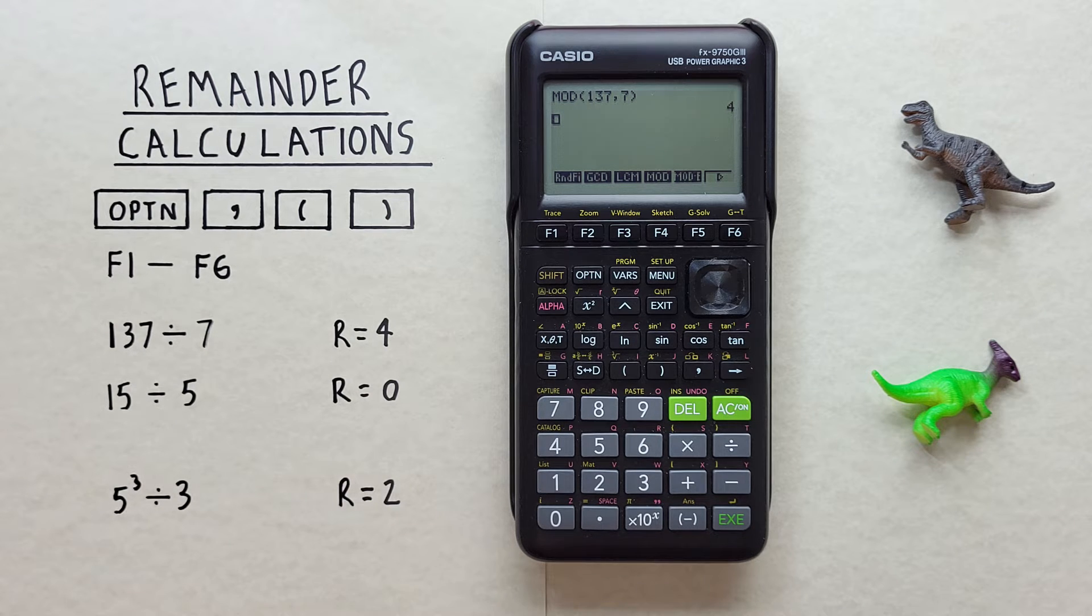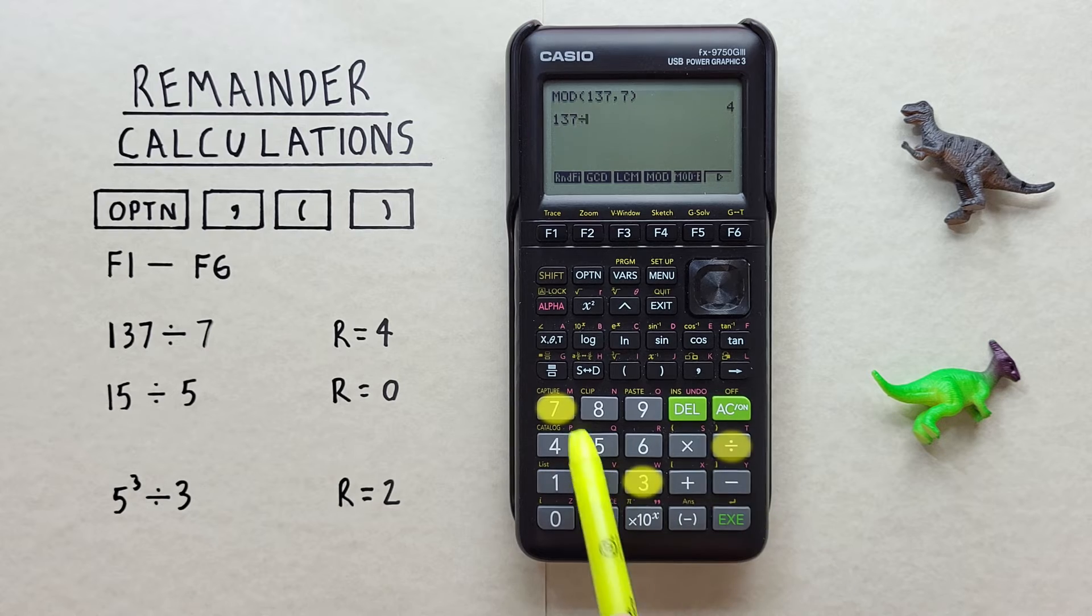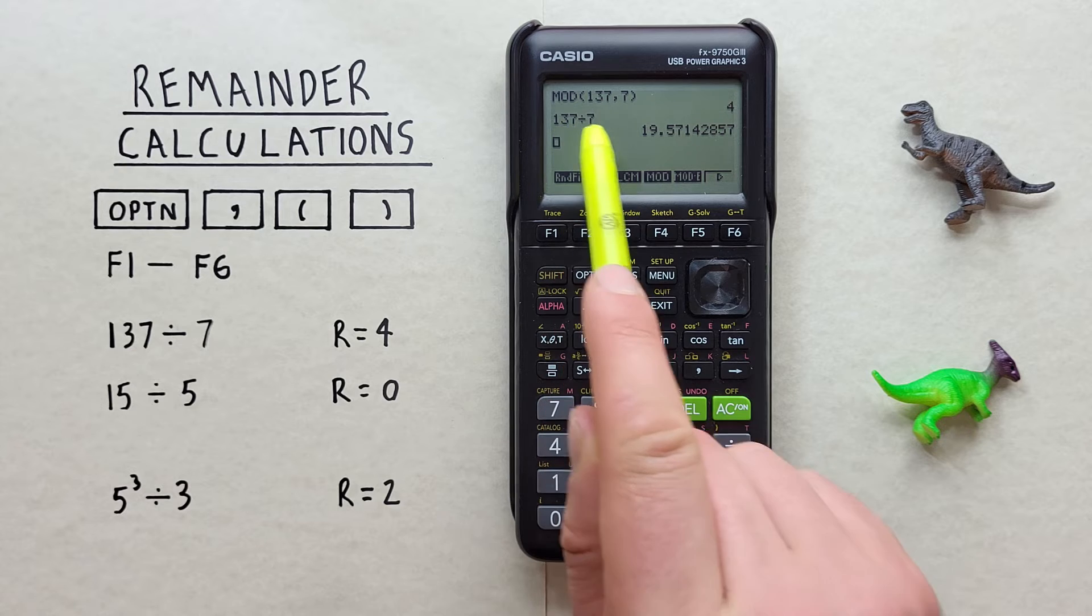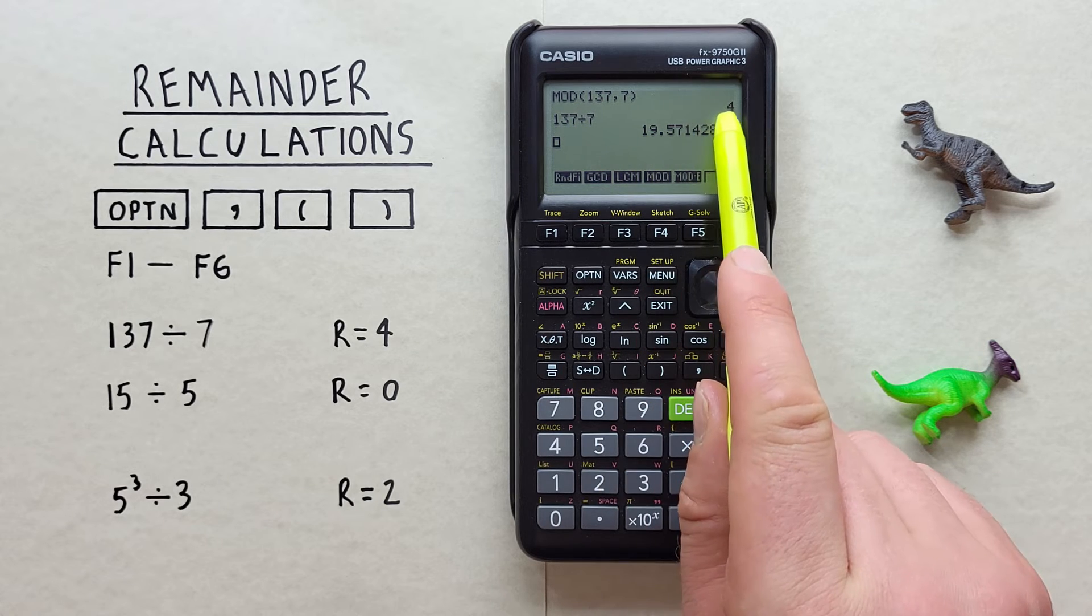Unfortunately, this doesn't show us how many times 7 goes into 137. But if we want to find that, we can easily do it by going 137 divided by 7. And now we know 7 goes into 137 19 times with 4 remainder.